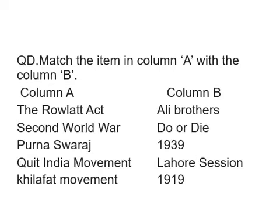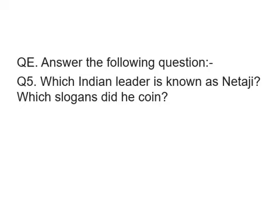Question D: Match the items in Column A with Column B. Column A: Rowlatt Act, Second World War, Purna Swaraj, Quit India Movement, Khilafat Movement. Column B: Ali Brothers, Do or Die, 1939, Lahore Session, 1919. Question E (in notebook): Which Indian leader is known as Netaji? Which slogans did he coin?